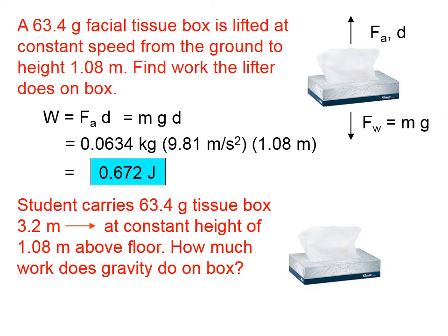How much work does gravity do on the box? Gravity pulls straight downward, always, and the distance that this box moves is to the right. Those are in no way parallel.